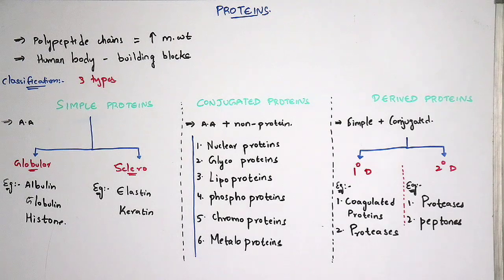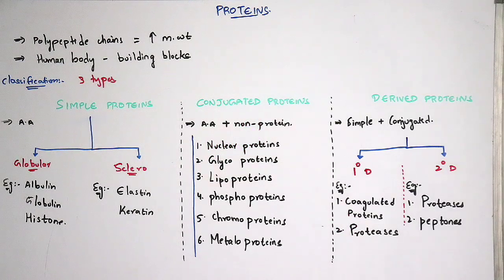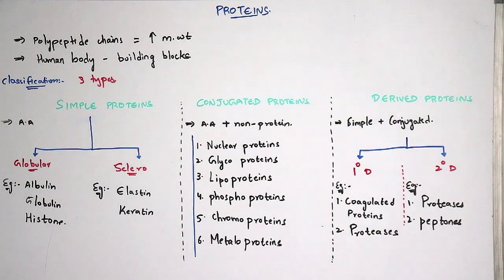Coming to the classification, proteins are classified into three types: simple proteins, conjugated proteins, and derived proteins. Simple proteins consist of amino acids only. Conjugated proteins consist of amino acids as well as a non-protein part. Derived proteins consist of both simple and conjugated proteins — they are mainly obtained or derived from simple and conjugated proteins.